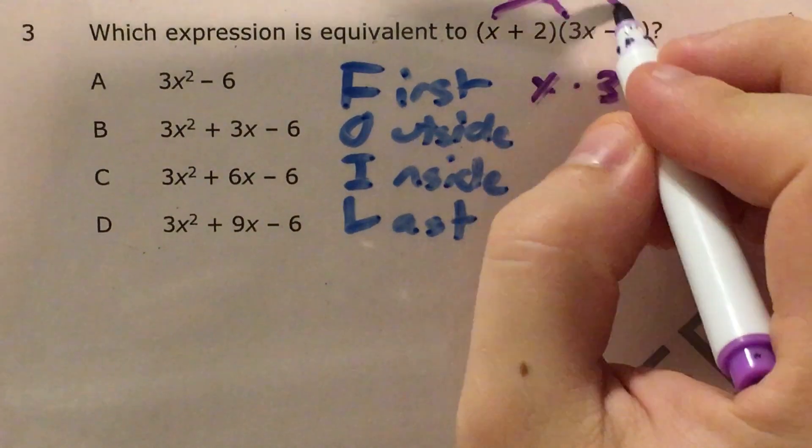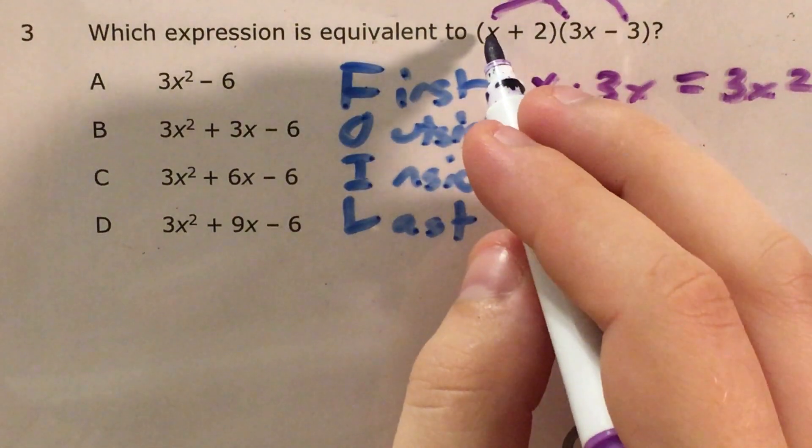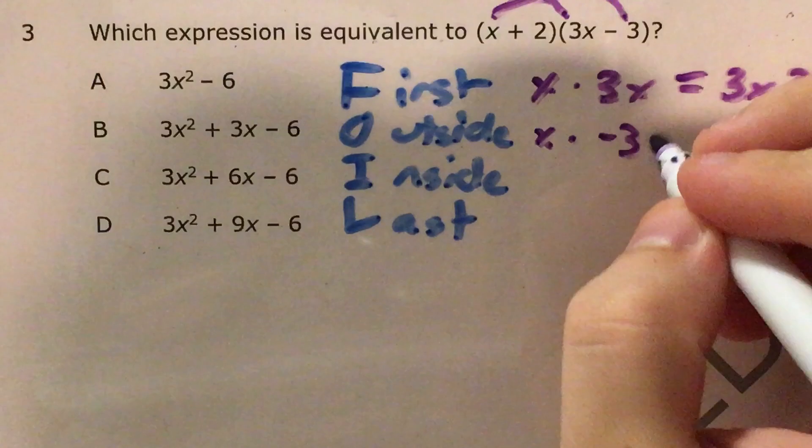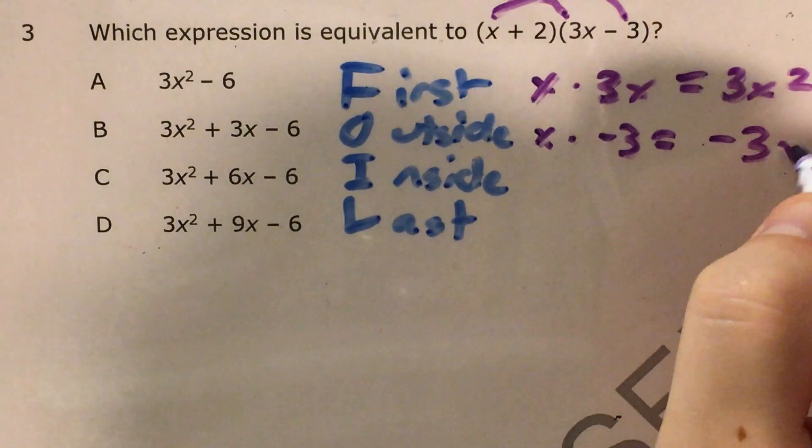My outside numbers, that's my far left one and my far right one, that's x times negative 3, which gives me negative 3x.